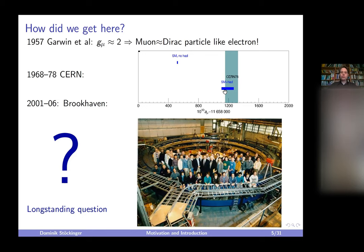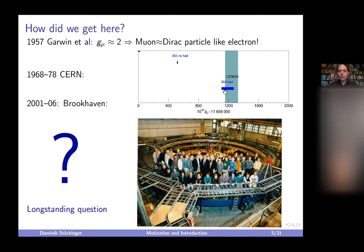The CERN experiment perfectly agreed with the prediction including strong interactions, while the prediction without was excluded by eight sigma. So the outcome was that hadronic contributions — hadronic vacuum polarization, to be precise — affect g-minus-2. Then at Brookhaven, 20 years later, the question was: do weak interactions also contribute to g-minus-2?